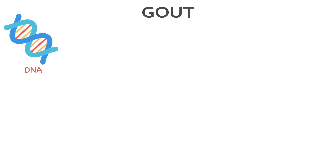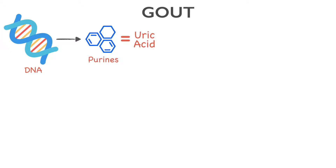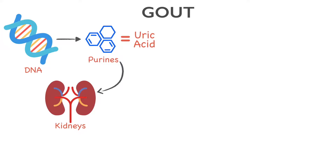How is uric acid formed and where does it come from? DNA is found in cells of all living organisms, including the food we eat and our own cells. DNA is broken down into similar molecules called purines. An end product of purine metabolism is uric acid. Gout is due to elevated levels of uric acid in the blood. Normally, your kidneys take uric acid out of your blood and put it into urine so that it can leave your body.